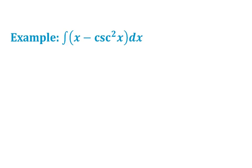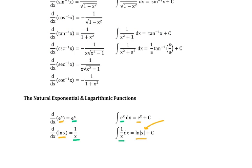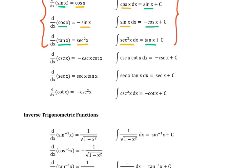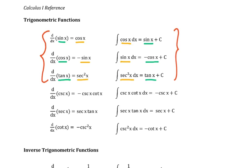The first example is more trigonometric: we're integrating x minus cosecant squared of x. Looking back at the reference sheet, the integral of cosecant squared is equal to negative cotangent. That's the key fact we'll use for this first example.